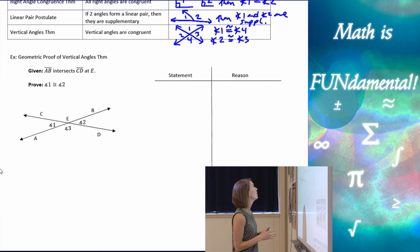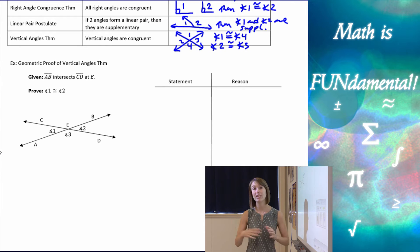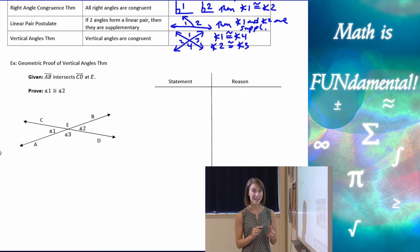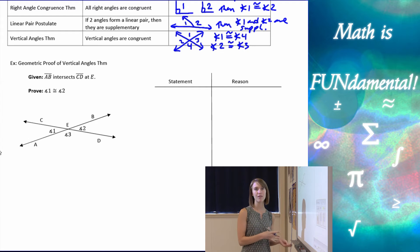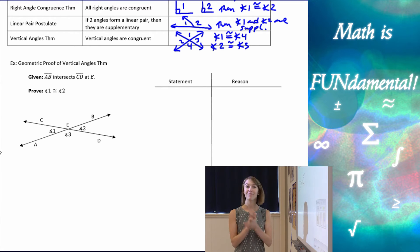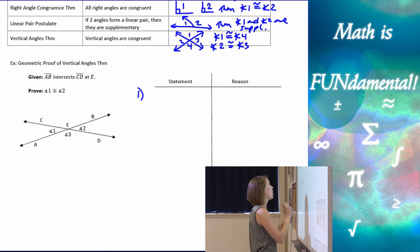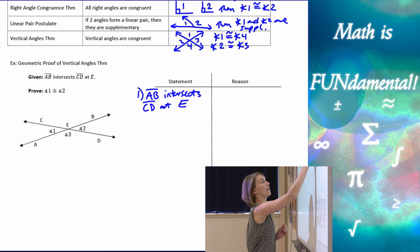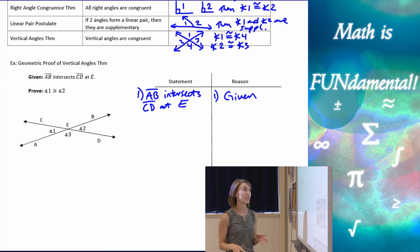Let's look at a proof example — a geometric proof of the Vertical Angles Theorem. Sometimes in geometry we have to prove theorems are true before we can use them. We're given this diagram, and we want to prove that angle one is congruent to angle two. We can't use the Vertical Angles Theorem in this proof because that's what we're trying to prove. The first line is always the given information: segment AB intersects segment CD at point E.